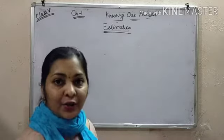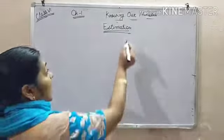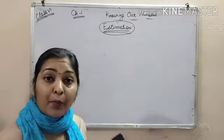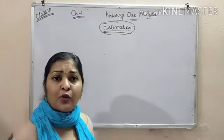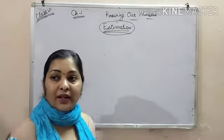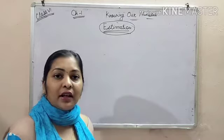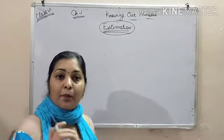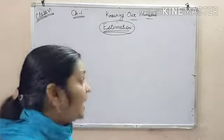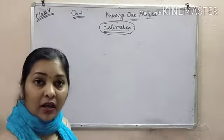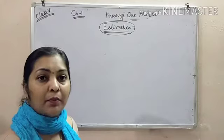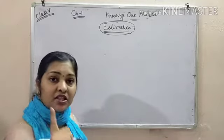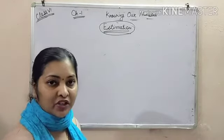Good afternoon dear students. Today we will learn a new topic: estimation. The word estimation means approximation — you have to approximate things. Suppose there is a quantity like 99; we can say it is nearly 100. That is approximation. We approximated 99 to 100, and that is known as estimation. Today we will learn rounding of numbers or estimating numbers to nearest tens, hundreds, thousands, and there is one general rule to do the estimation.